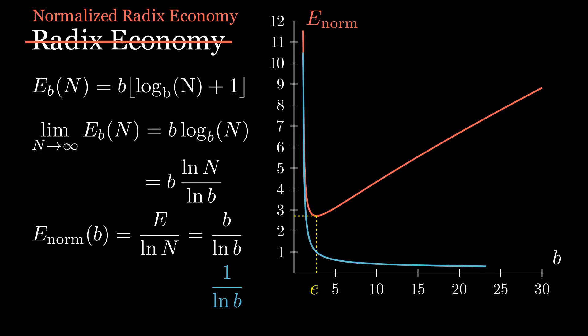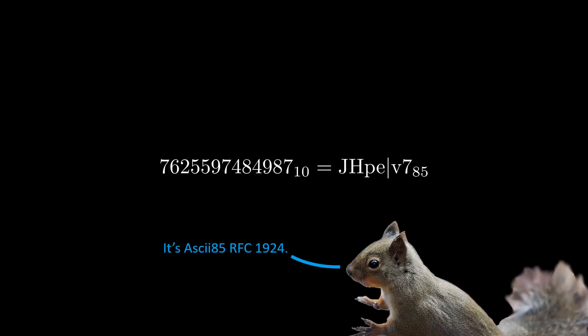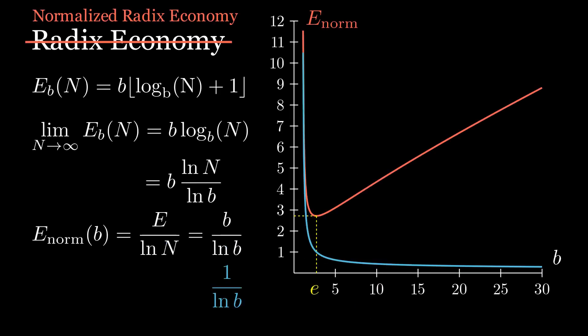And if we do that, the larger base is always going to win out. It won't be as easy to use, but it will be the most efficient. But instead we multiply by b, which favors smaller bases that take a lot of digits to write. Why would we do that?